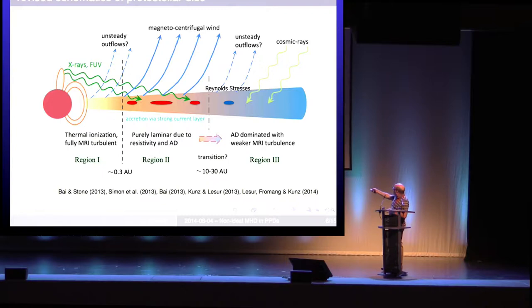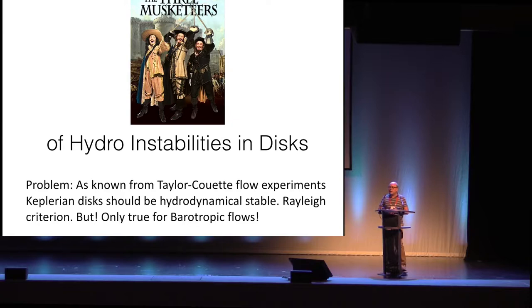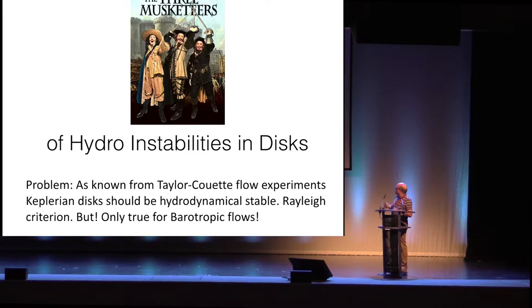We want to understand the properties of turbulence inside the region that is dead with respect to magnetic fields. I will talk about three different instabilities — and after my talk I hope you will remember that I discussed three new instabilities which work together, not against each other. I've chosen the three musketeers as a metaphor to explain the three individual methods that have now become established.